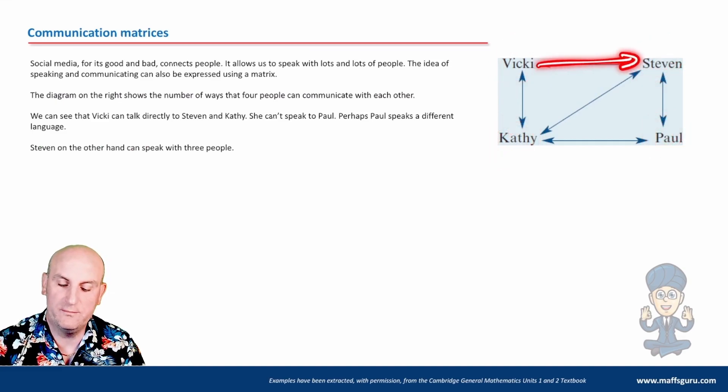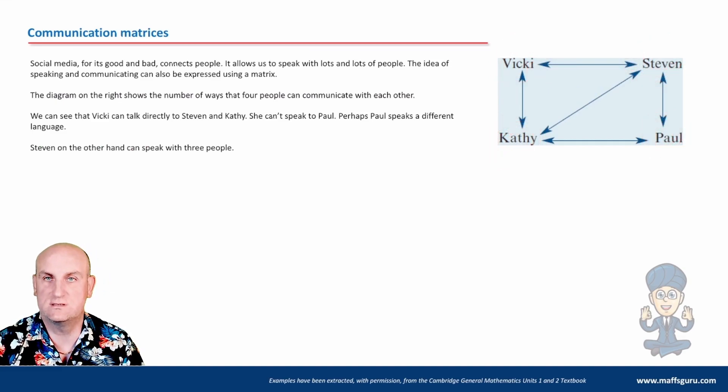And the arrows that point between them are the connections. The ways that these people can actually talk. So in that situation, Vicky and Stephen can talk to each other. Vicky and Kathy can both talk to each other in both directions. It's not just that Vicky can talk to Kathy. It's that Kathy can talk to Vicky as well. And you're going to say, well, what situation might there be where they won't? Languages, for example.